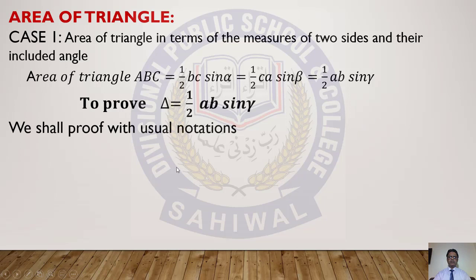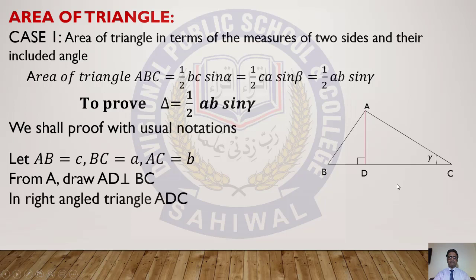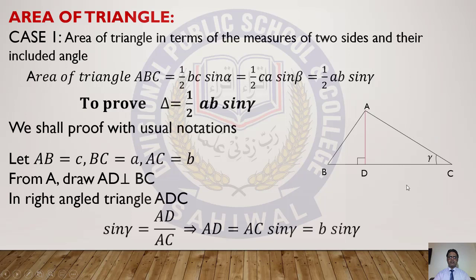We shall prove this with usual notation: AC = b, BC = a, AB = c. From point A, draw perpendicular AD on side BC. So in right angle triangle ACD, we have sin γ = perpendicular over hypotenuse = AD over AC. Here AD = AC sin γ.